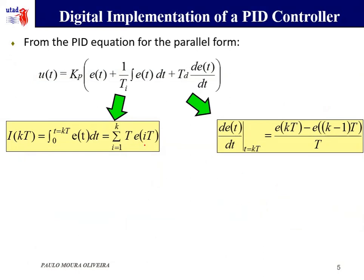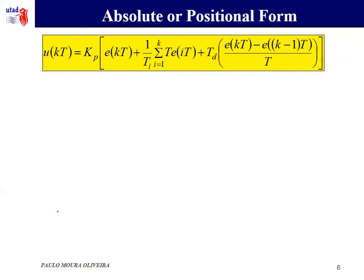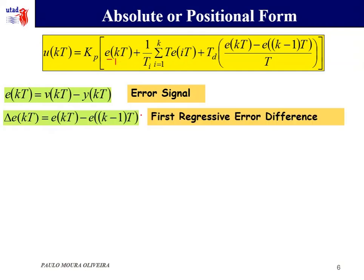If you then replace this integral, continuous integral by the approximation, the sum, and the continuous derivative by this interpolation, we obtain a digital implementation of the PID controller which is called the absolute form. This is the absolute or positional form. The error signal is evaluated like this, and then it is common to represent this difference, the first regressive error difference, using this delta e.